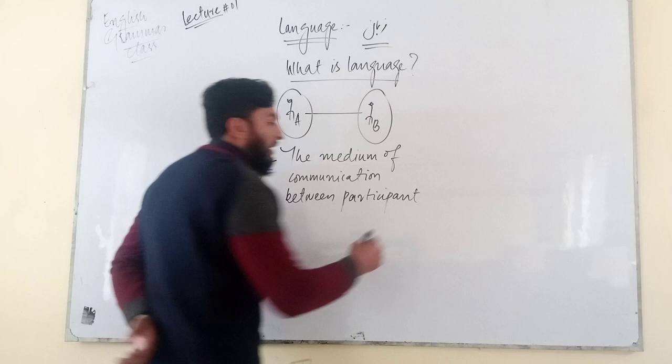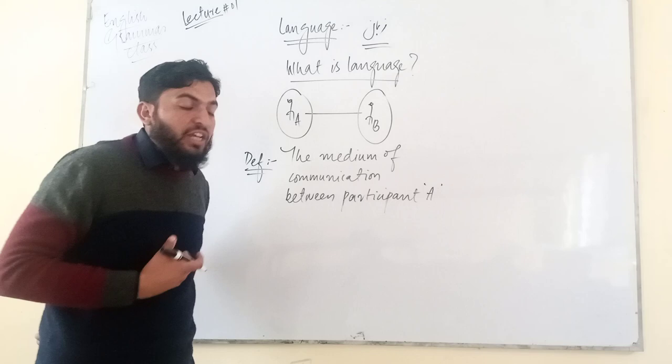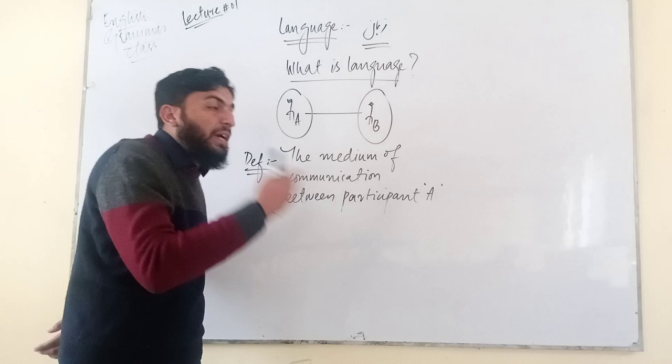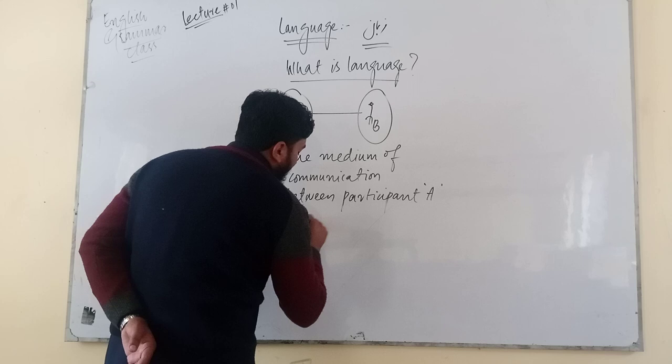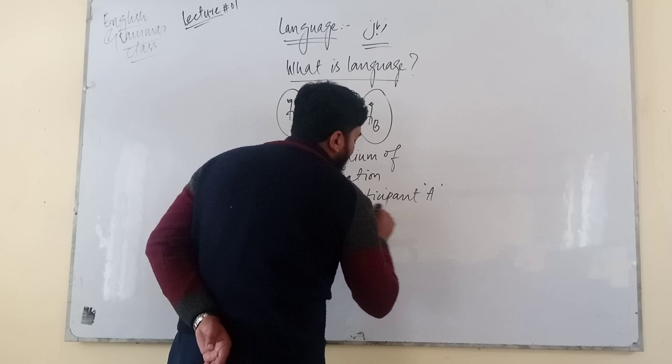Participant کا معنی کیا ہے - حصہ لینے والا. تو مثال کے طور پر A جو ہے وہ کون ہے - وہ مثال کے طور پر درویش کا سامعین ہے. سامعین وہ سننے والا کون ہے یا جب درویش لکھے تو درویش کو پڑھنے والا کون ہے - that is participant B.